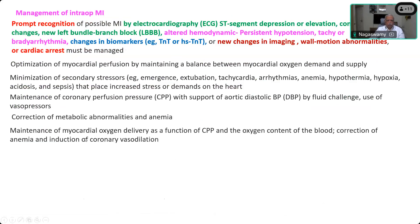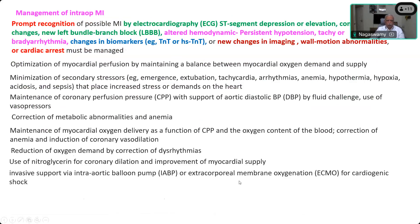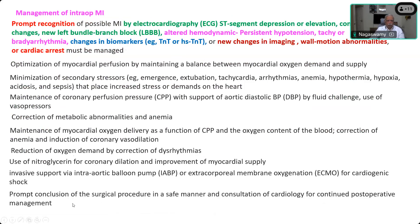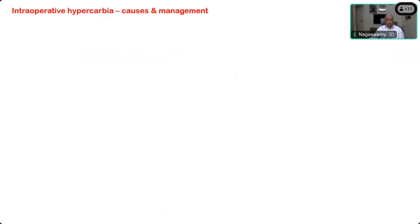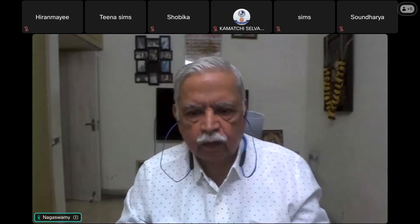Correct metabolic abnormalities and anemia. Maintain myocardial oxygen delivery as a function of cardiac output and oxygen content of the blood by correcting anemia and using coronary vasodilators. Reduce demand by correcting dysrhythmias. Use nitroglycerin for improved coronary supply. For cardiogenic shock, consider invasive support with an intra-aortic balloon pump or extracorporeal membrane oxygenation. Promptly conclude the surgical procedure in a safe manner, and consult cardiology for continued postoperative management, including percutaneous coronary intervention or emergency CABG if needed.